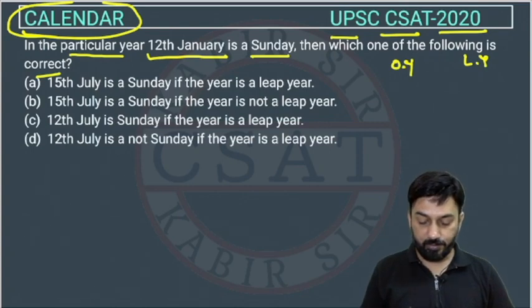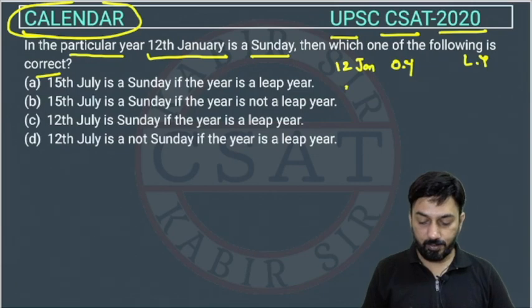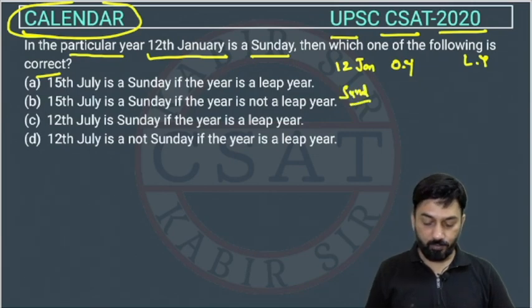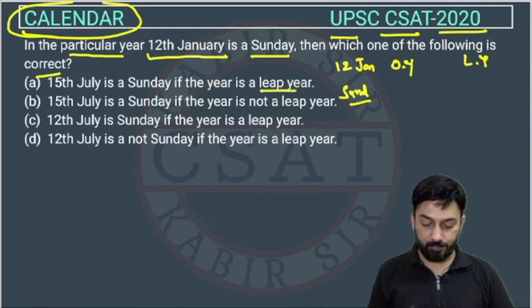They have given that on 12th January there is a Sunday. Now we have to consider whether 15th July is a Sunday, both for if the year is a leap year and if it is not a leap year. So we have to consider both cases.